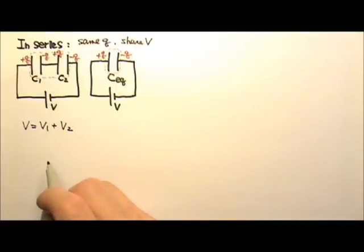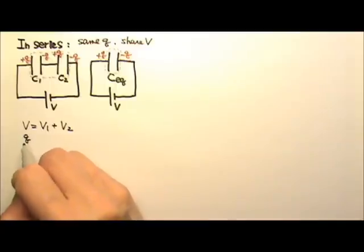Since Q equals to CV, V is Q over C. This voltage would equal to the charge Q divided by the equivalent capacitance.